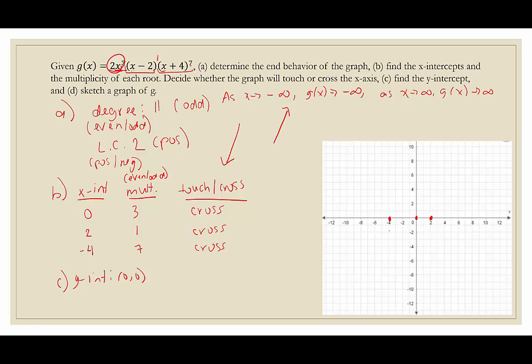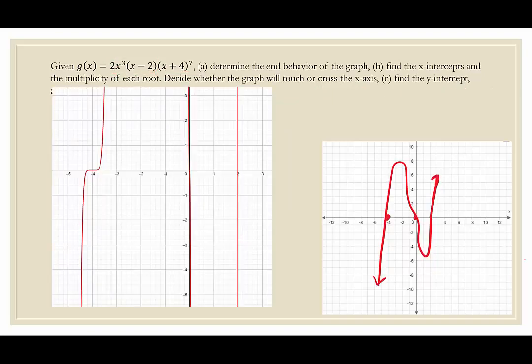Because we know the graph goes down to negative infinity on the left, and negative 4 is the leftmost crossing, after negative 4 the graph is coming down. It crosses the x-axis at negative 4, then turns back around to hit 0, turns again, and continues. The actual graph shows it crosses at negative 4, goes tall, crosses at 0, drops way down, then comes back.